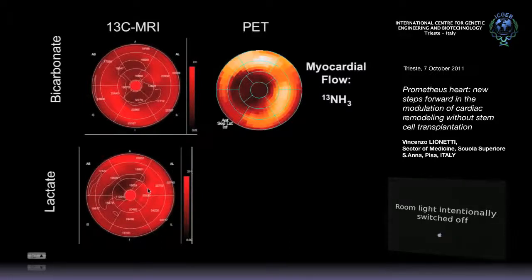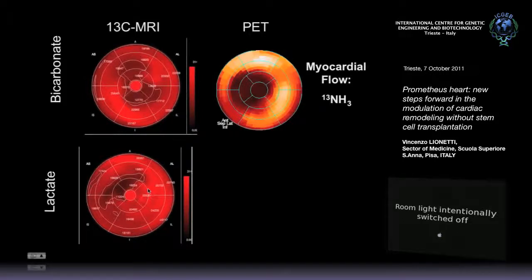This is the left ventricle, this is the apex, and then the base. As you see, there is a hole here with a dramatic reduction of myocardial perfusion when you have damage. This damage is also compared to a reduction of the metabolism of the heart in the same area. So it means that the function of the myocardium is related, of course, to the perfusion.